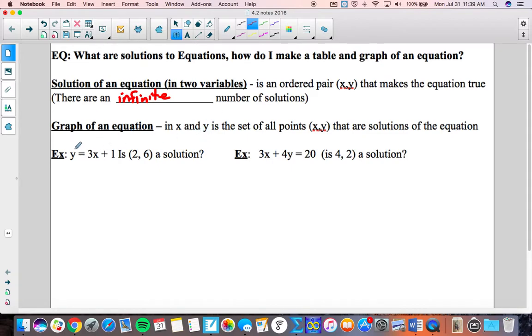So here we're wondering in this equation is (2,6) - x is 2, y is 6 - is that a solution to this equation? So we'll substitute in 6 for y and 2 for x. And we'll simplify this left side. What does this equal? Use your order of operations, 3 times 2 is 6, 6 plus 1 is 7. Does 7 equal 6? No.